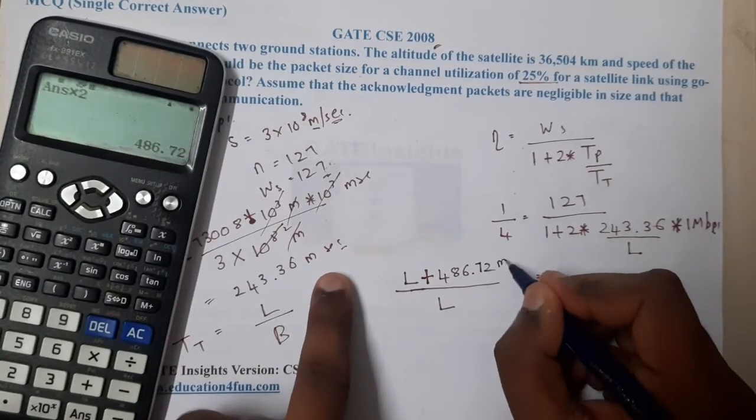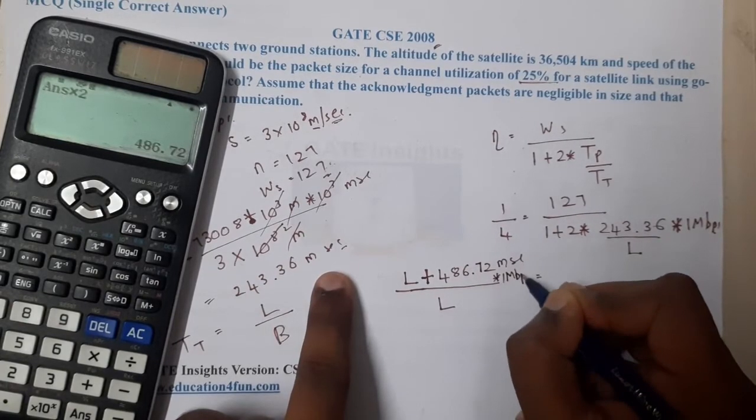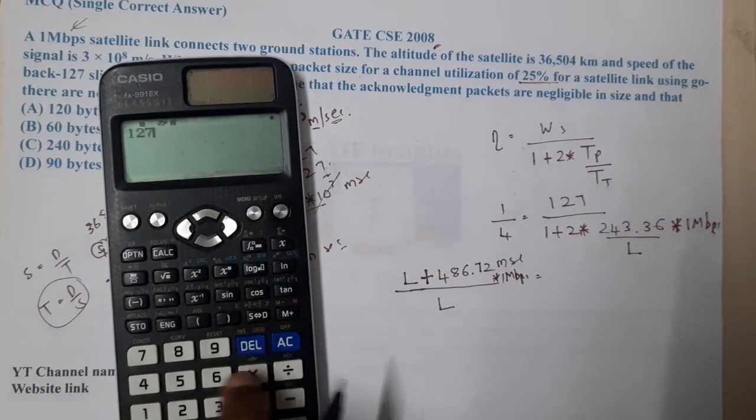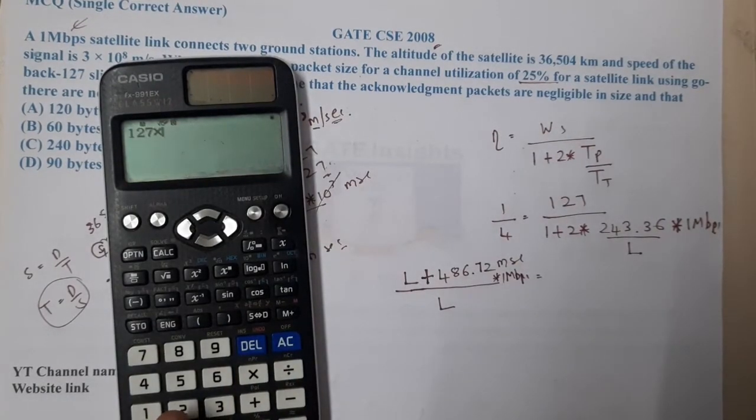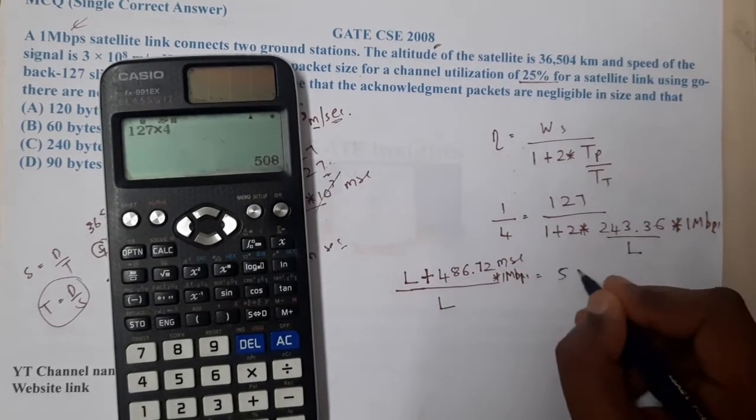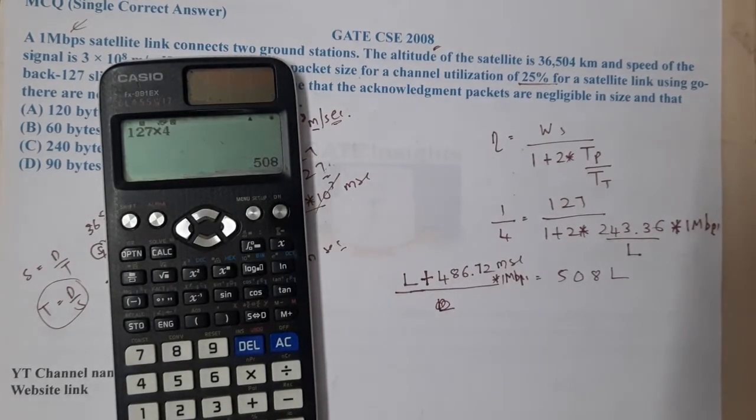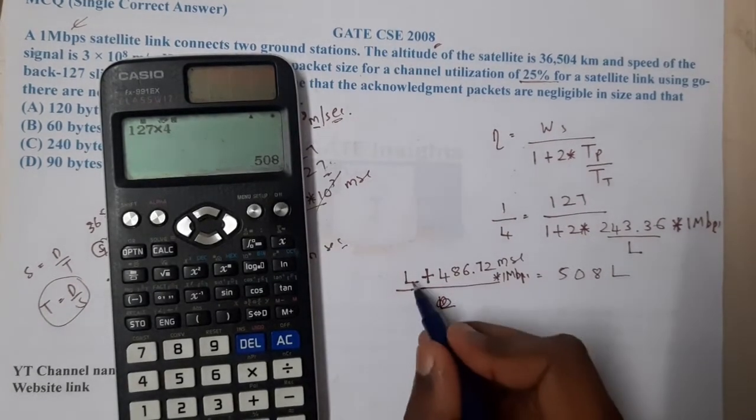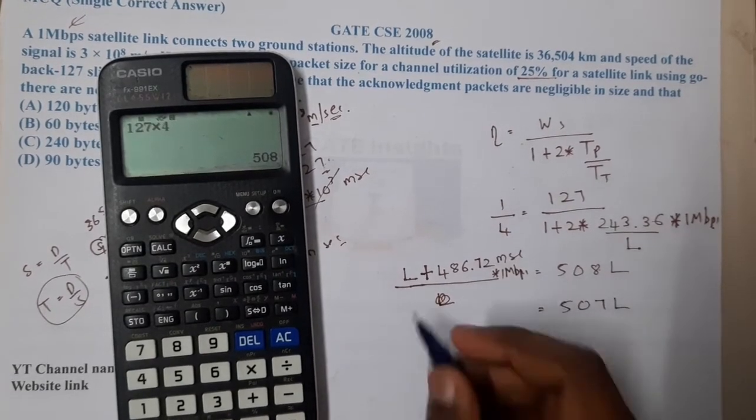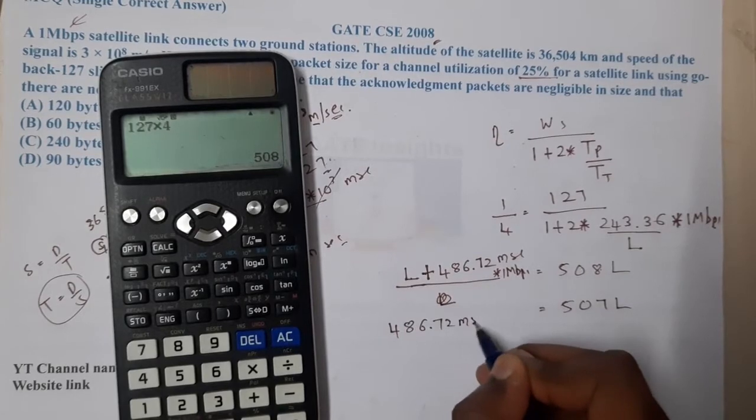507L equals 486.72 milliseconds × 1 Mbps. Converting units: 486.72 milliseconds times 10^6 (for Mbps to bits per second).